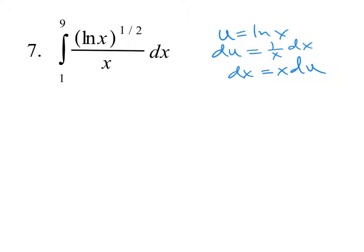With that in mind, let's rewrite this. If I replace my bounds of 1 and 9 into ln x, that's ln of 1 and ln of 9. The ln of 1 is just 0, so I'm going to put a 0 there.